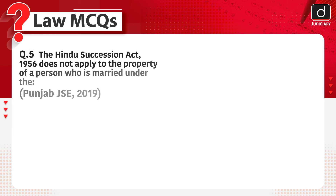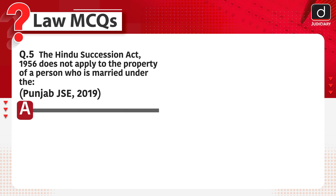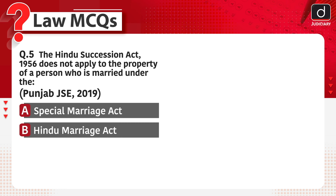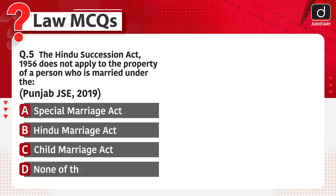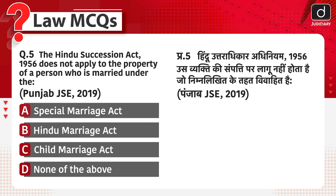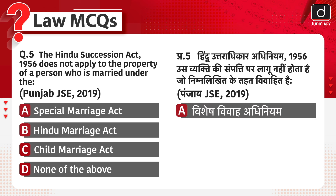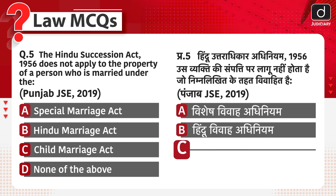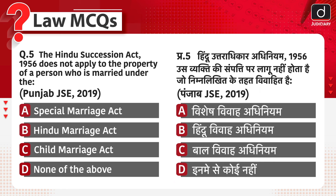Last question: the Hindu Succession Act, 1956 does not apply to the property of a person who is married under which act? Options: the Special Marriage Act, Hindu Marriage Act, Child Marriage Act, or none of the above. Hindu Uttaradhikar Adhiniyam 1956 us vyakti ki sampatti par laagu nahi hota jo nimnalikhit ke tehat vivaahit hai — Vishesh Vivaah Adhiniyam, Hindu Vivaah Adhiniyam, Bal Vivaah Adhiniyam, ya in mein se koi nahi. The correct answer is option A — Special Marriage Act. Iska sahi jawab option A hai — Vishesh Vivaah Adhiniyam.